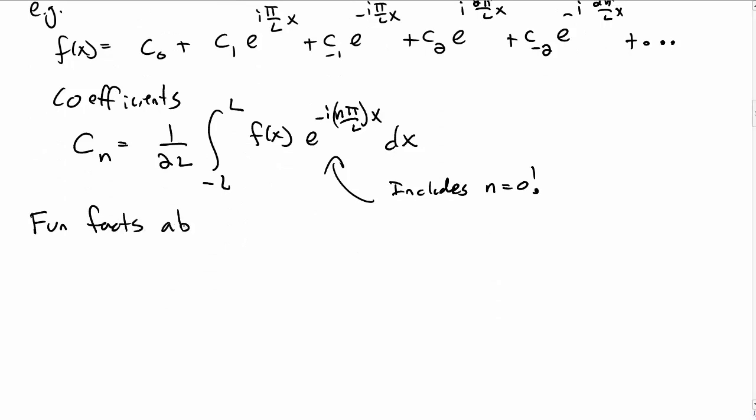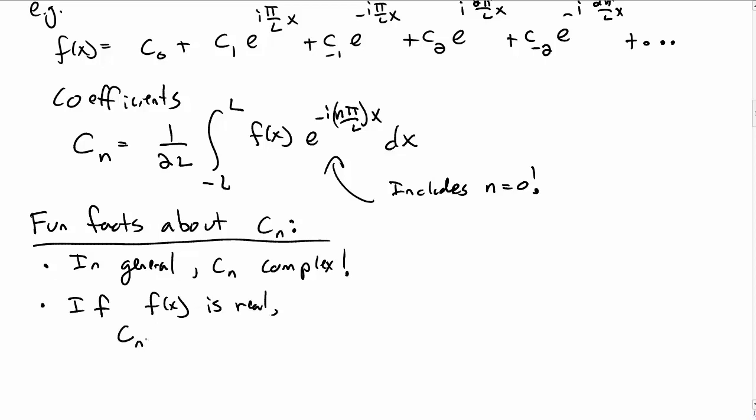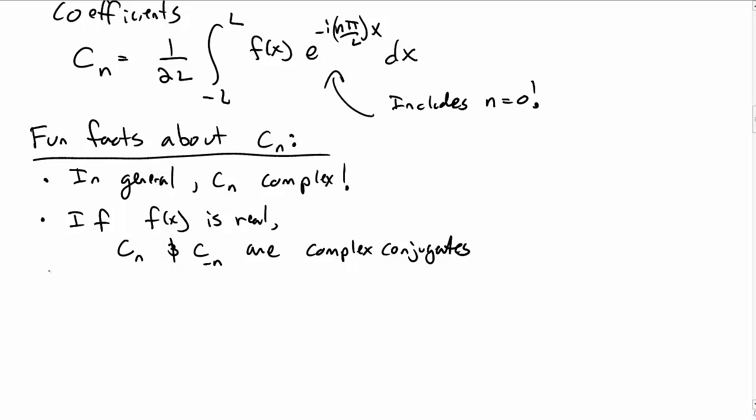Before we move on, let's talk about a few fun facts about the c sub n coefficients in the complex Fourier series. So, in general, as we just mentioned, the c sub n coefficients are complex. Also, if f of x is a real function, which it almost always will be for us, then c sub n and c sub minus n are actually complex conjugates. That might not be immediately obvious, but if you stare at that expression for c sub n long enough, you can figure that out.